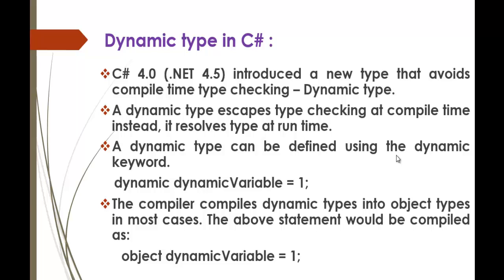Dynamic type can be defined using the dynamic keyword. I have a variable called dynamic variable, and before that I am declaring it as dynamic type using the keyword dynamic, with the value assigned as 1. At runtime the type of this variable will be assigned. Since I assigned a number here, at runtime the type of this variable is integer. The compiler compiles the dynamic type into object type in most cases, and if compiled in Visual Studio it will convert this dynamic type into object type at runtime.